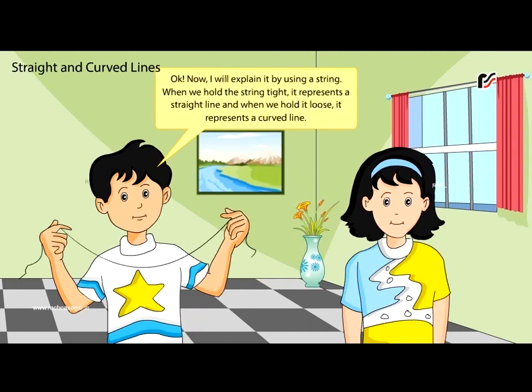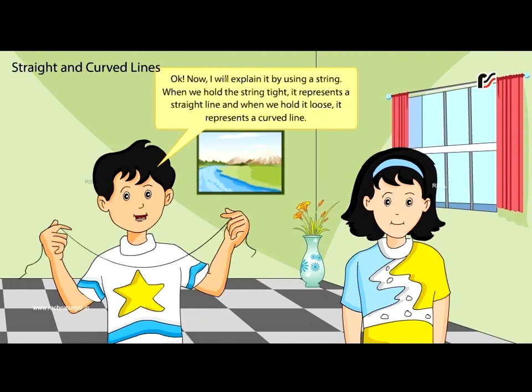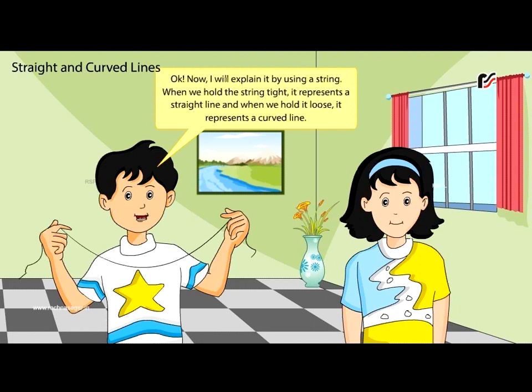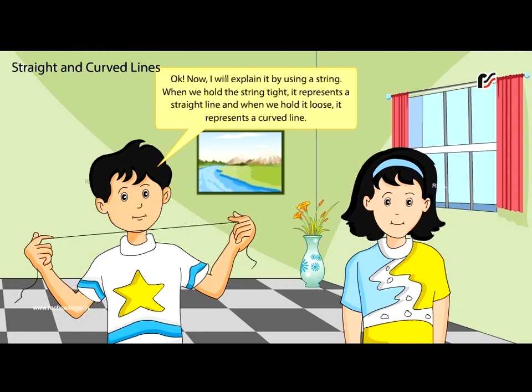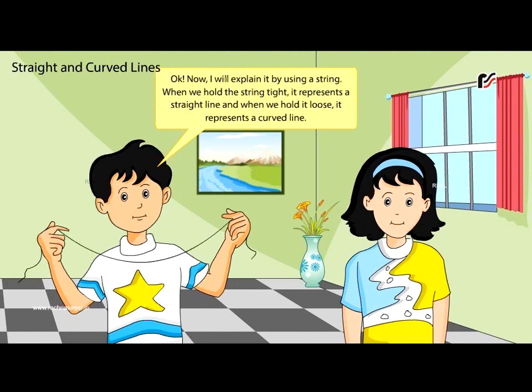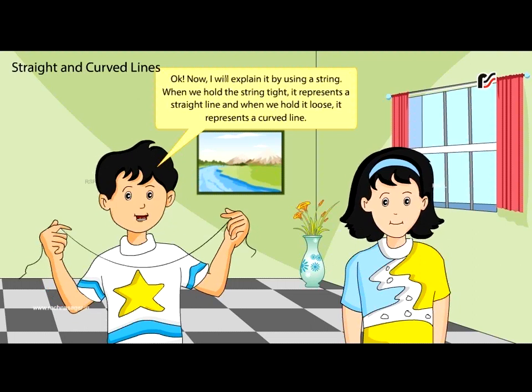Okay, now I will explain it by using a string. When we hold the string tight, it represents a straight line. And when we hold it loose, it represents a curved line.